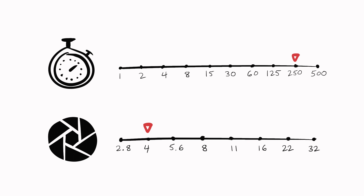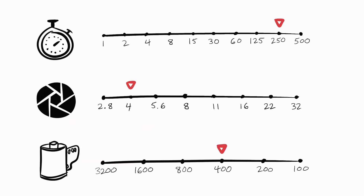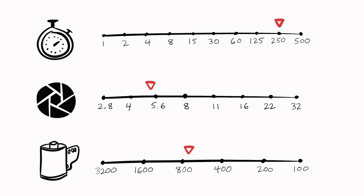Remember how I was out of my ISO 400 film? Let's say the only roll I have left in my bag is ISO 800. Well, now I'm doubling the sensitivity of the film to light. So I need to cut in half the amount of light that's coming into the camera, either by cutting the shutter speed in half or by closing down my aperture one stop. And this would also create an equivalent exposure.